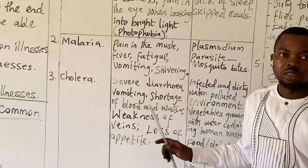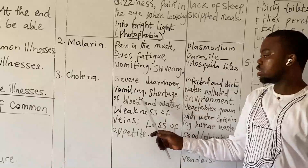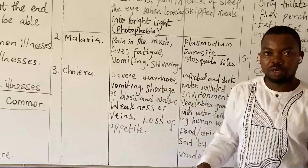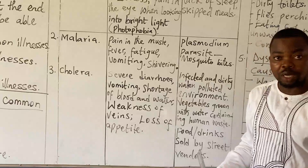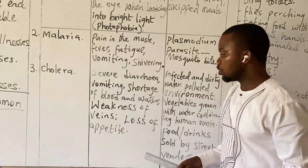Cholera — what are the symptoms of cholera? We have severe diarrhea, that is frequent stooling. We have vomiting. We have shortage of blood and water — the water dries fast in the body and becomes short. Then we have weakness of the body, and we have loss of appetite — you don't feel like eating, you feel you don't have the urge.